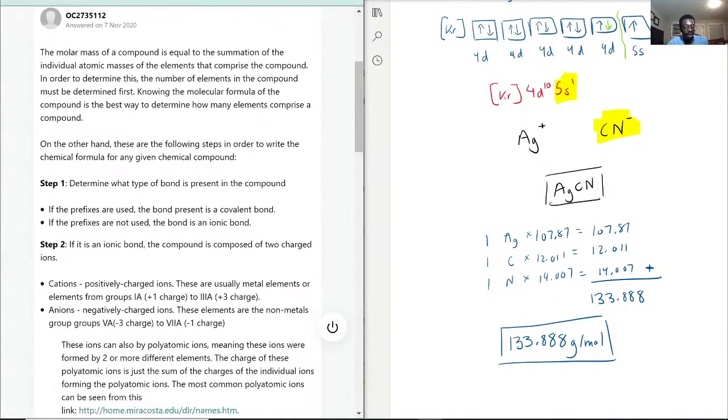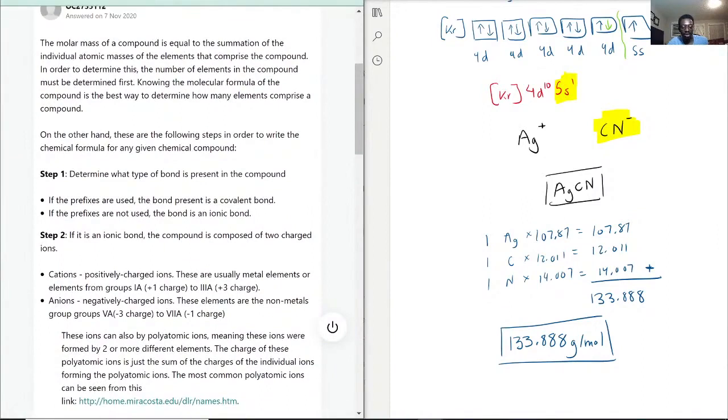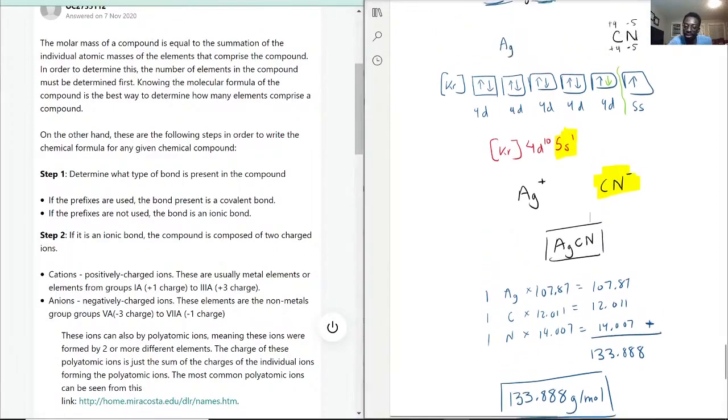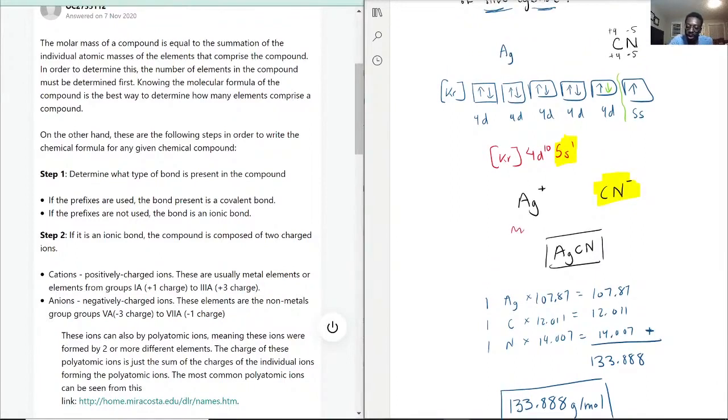Definitely breaking it down more. Determine what type of bond is present. Prefixes are not used in silver cyanide, so they say it's an ionic bond. That is something that we should have mentioned. Silver is a transition metal, so that is going to be a metal and non-metal.